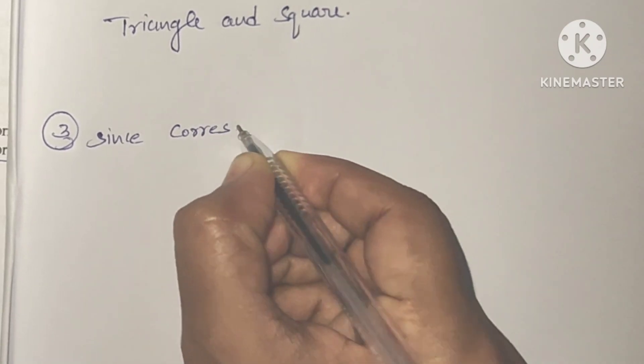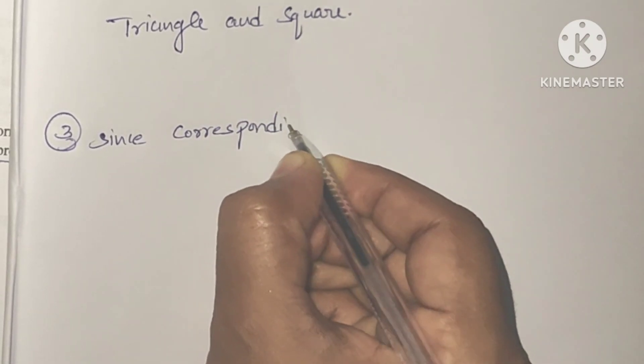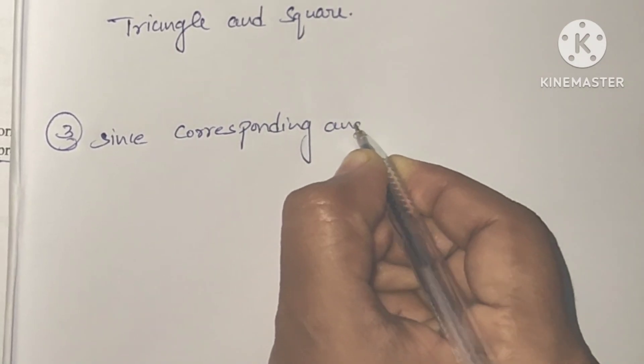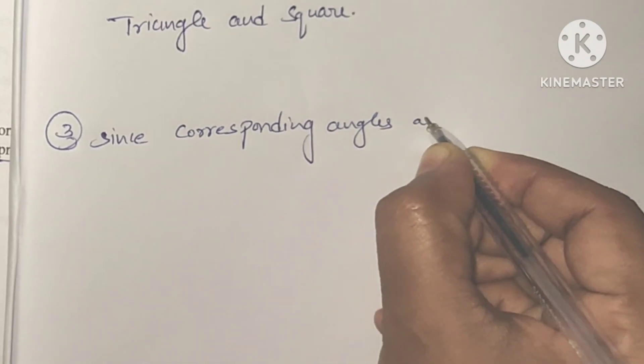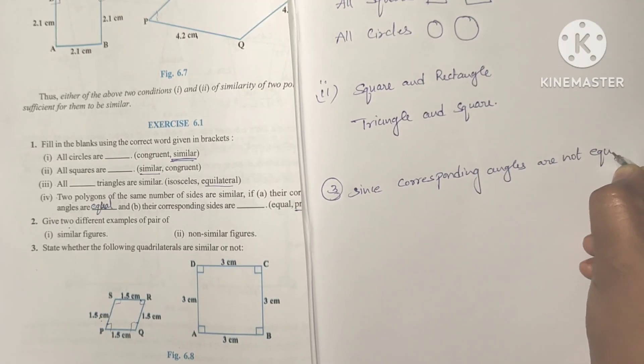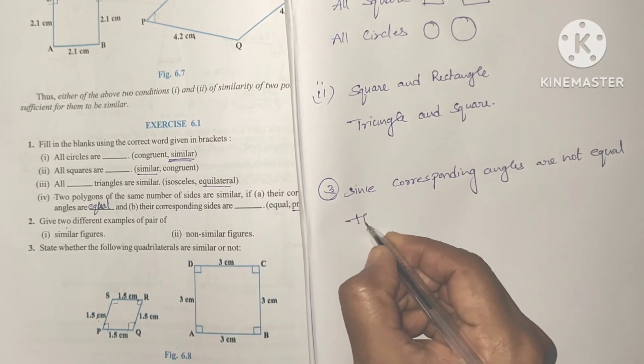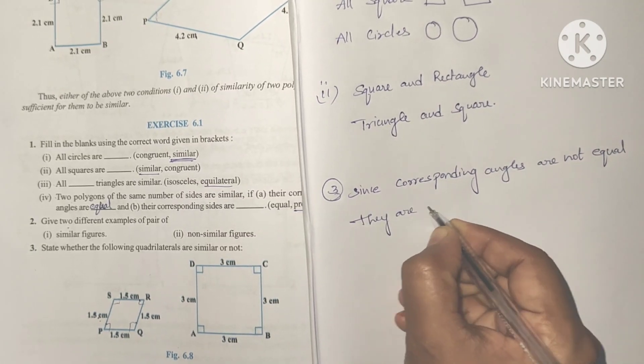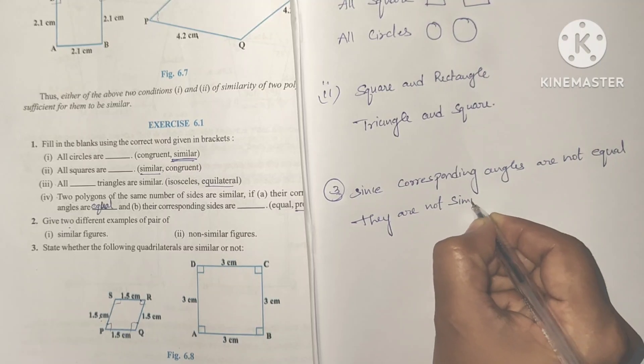Corresponding angles are not equal. They are not equal. So they are not similar, okay.